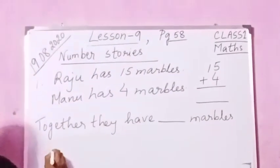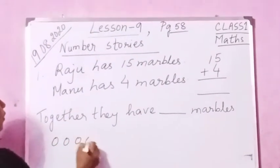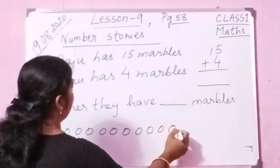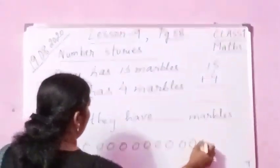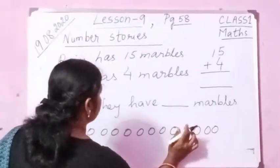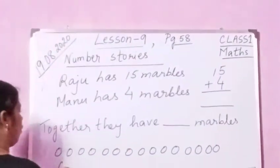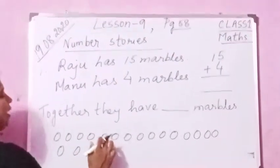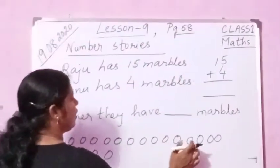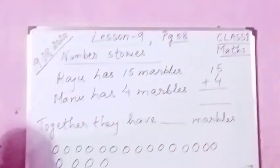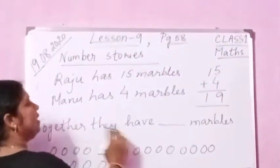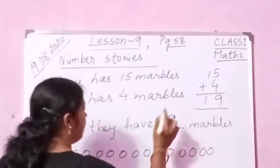Let us make marbles. Let us make 1 through 15. Okay, 15 marbles. Now 15 plus 4 — we add 4 more. Counting all together: 1, 2, 3 ... 16, 17, 18, 19. How many are there? 19 are there. So together they have 19 marbles.